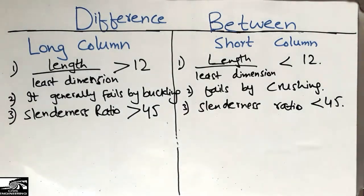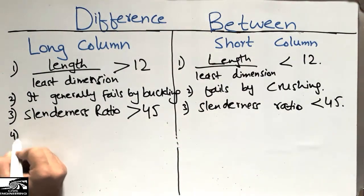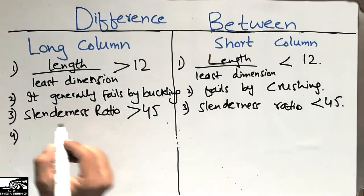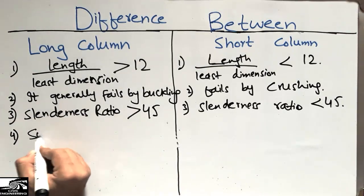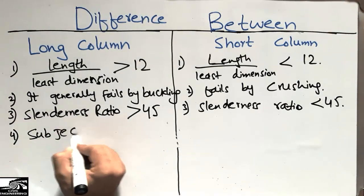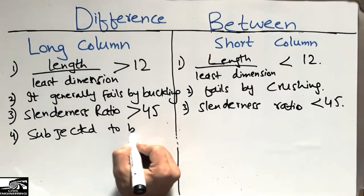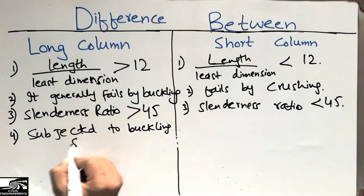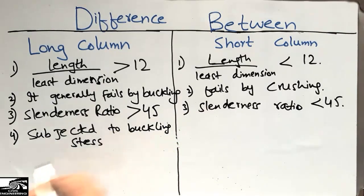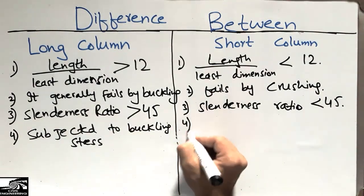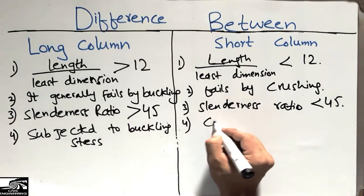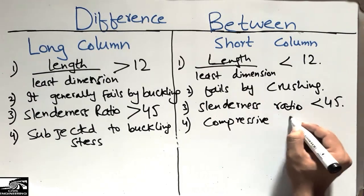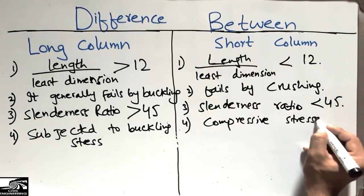The fourth difference is the type of stress. Long columns are subjected to buckling stresses, while short columns are subjected to compressive stresses.